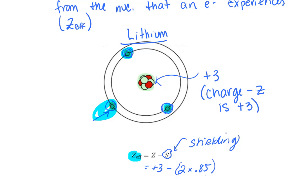We can calculate Z-effective using Z minus S, where Z is the charge from the protons and S is the shielding effect. These Z-effectives are really important because they are the basis for explaining atomic size trends and ionization energy trends. Going through this calculation for lithium gives us a final answer of 1.3 — so that's the Z-effective for the valence electron of lithium.